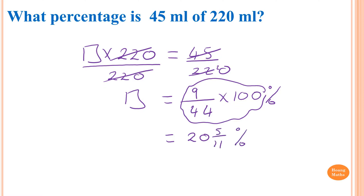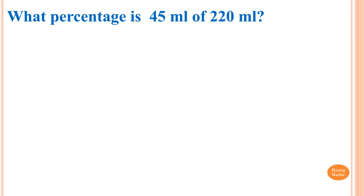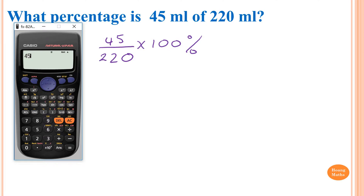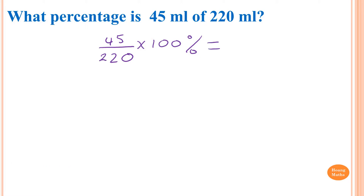That's how you do it. The easiest way: all we need to do is just go 45 over 220 times by 100. So that's 45 over 220 times 100, which gives me 225 over 11. I press the SD button to get a decimal, then Shift-SD to get a mixed numeral. So the answer is 20 and 5 over 11.